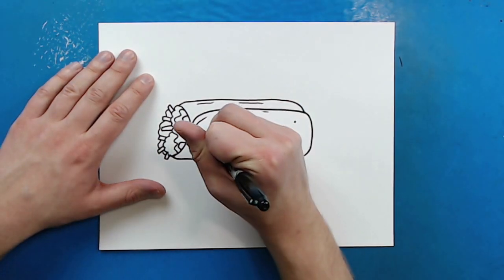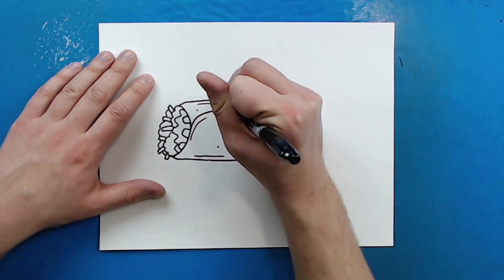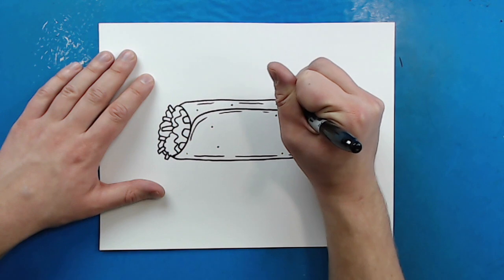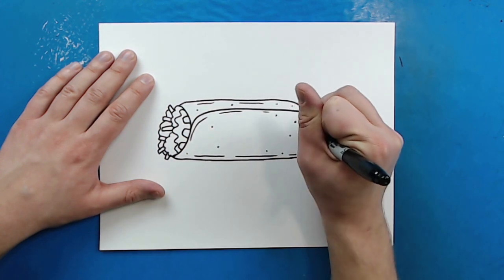Now I'm also going to put some little dots all over it as well just to make it look like it's in a little flour tortilla that has a little texture on it. Just kind of put them all over.